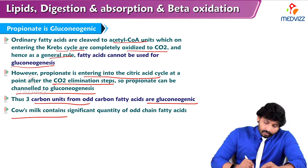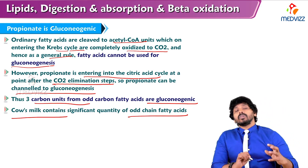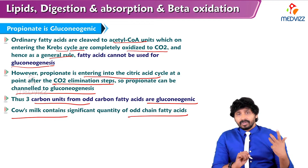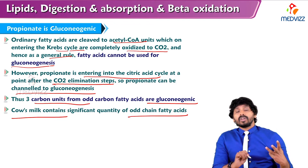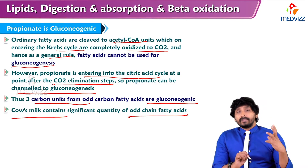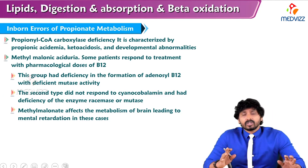Cow milk contains a significant quantity of odd chain fatty acids. So a person consuming cow milk should have a sufficient mechanism to convert propionate into succinyl-CoA, meaning that person should not be deficient in vitamin B12.